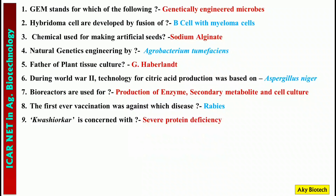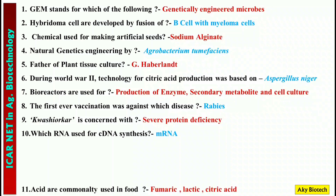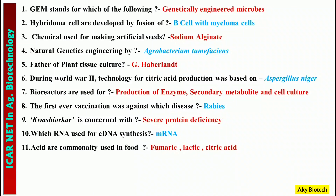Question 9: Kwashiorkor is concerned with — severe protein deficiency. Question 10: Which RNA is used for cDNA synthesis? — mRNA is used for cDNA synthesis. Question 11: Acids commonly used in food — fumaric acid, lactic acid, and citric acid; all three are used in food.